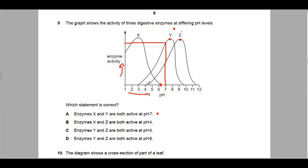Enzymes X and Z are both active at pH 4. pH 4, enzyme Z is not active there, you can see there's nothing on Z. So enzyme Z is not active, so this one's wrong. Enzymes Y and Z are both active at pH 4? Wrong.